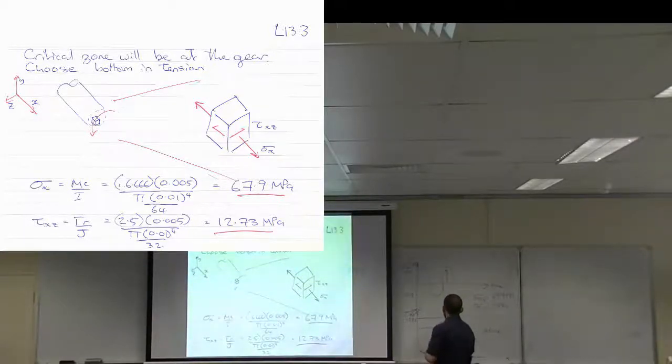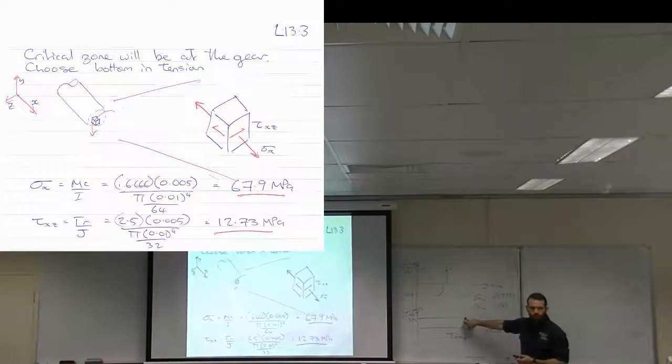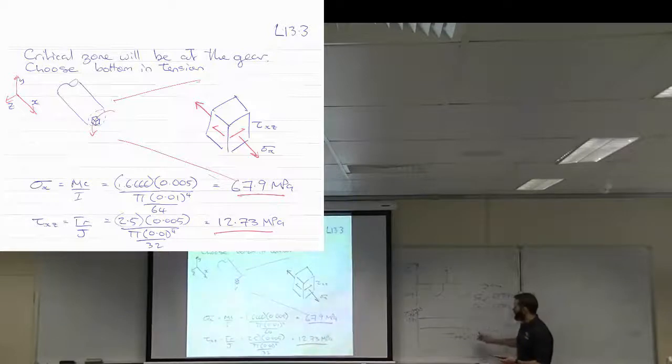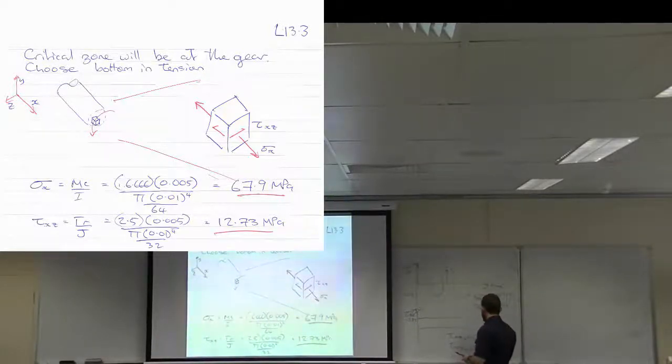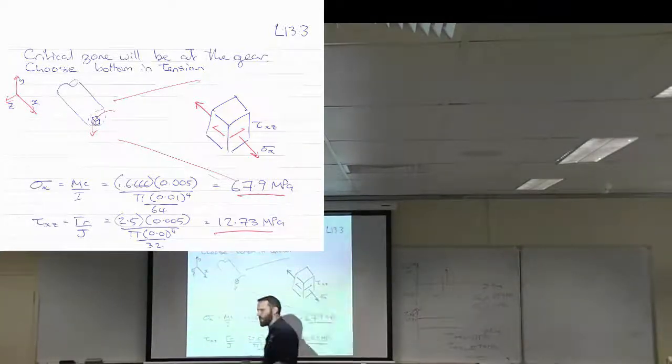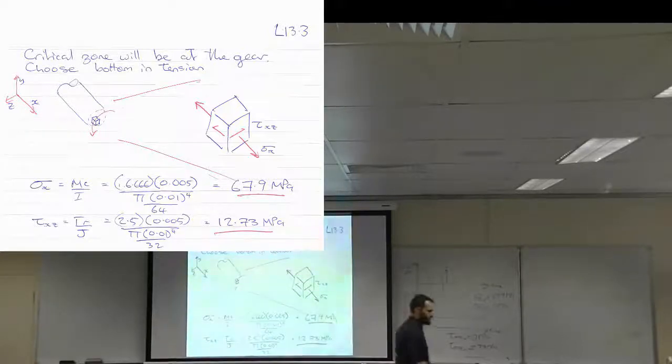Excellent. And what about this guy? Tau xz alternating. Half of zero. Half of zero is? Zero. Not going anywhere. And tau xz mean. What's my mean? 12.73 megapascals. Alright. So now I have to express both of those stresses. I have expressed them in terms of A and M components.